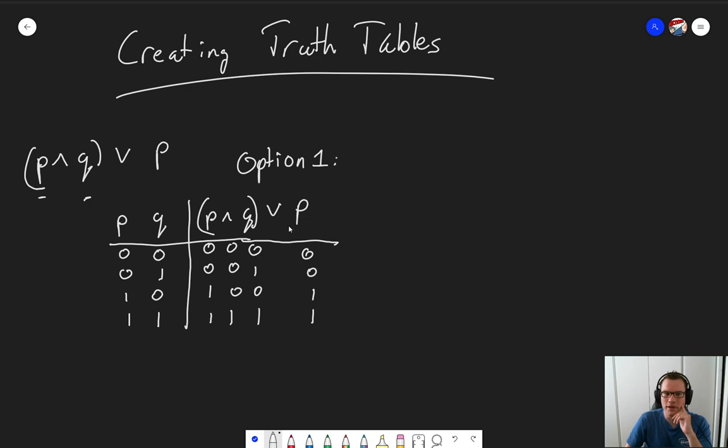Now that we've done this, we can take a look at the OR. The OR is between this column and this column, 0 or 0 is 0, 0 or 1 is 1, 1 or 1 is also 1.